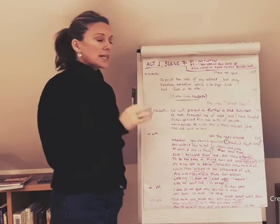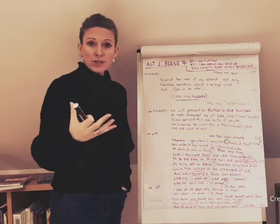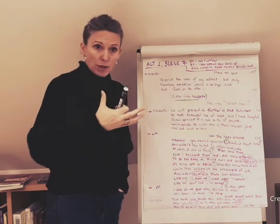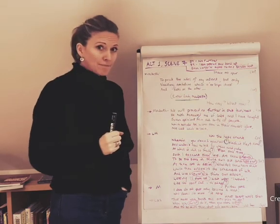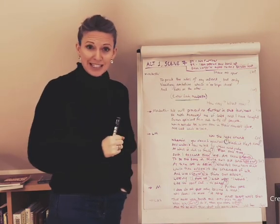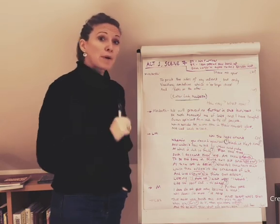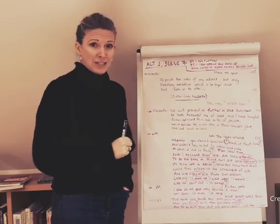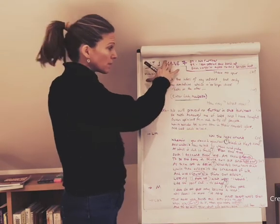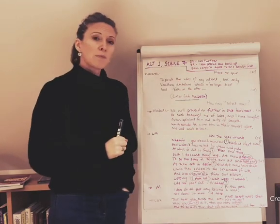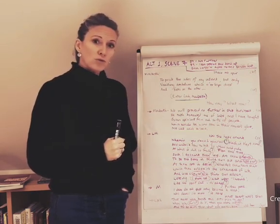Act 1 Scene 7 is after Macbeth has been to war. He's a hero. He's had the prophecies from the witches that he's going to become Thane of Cawdor and then become king. He's let Lady Macbeth know that. She's excited because Duncan's staying that night in their castle and she wants to have him killed so that Macbeth can become king. Macbeth is already having second thoughts at this moment. He has a very interesting soliloquy just before this, at the beginning of this scene, before he sees Lady Macbeth, where he lists all the reasons that he shouldn't kill Duncan.